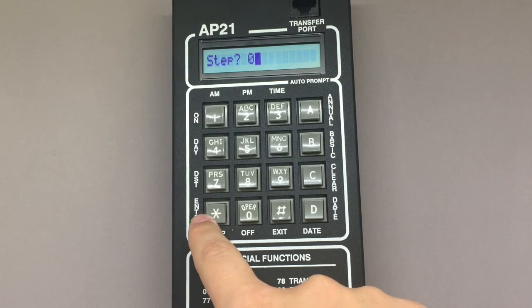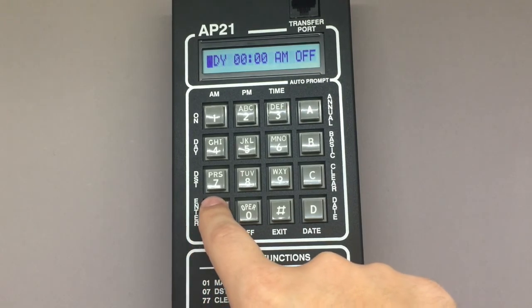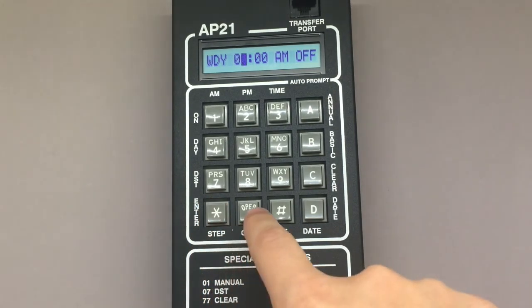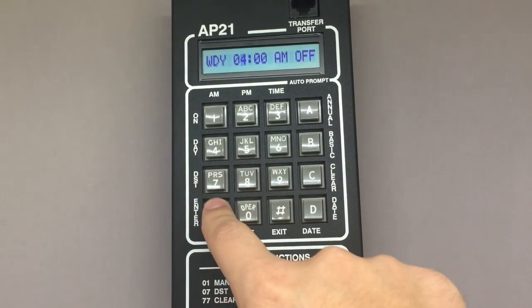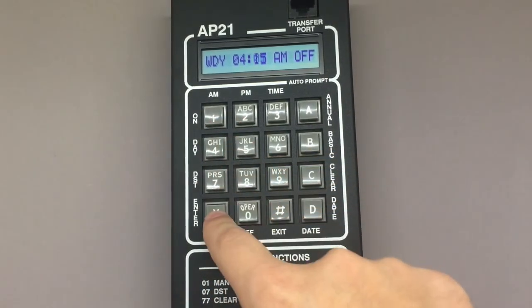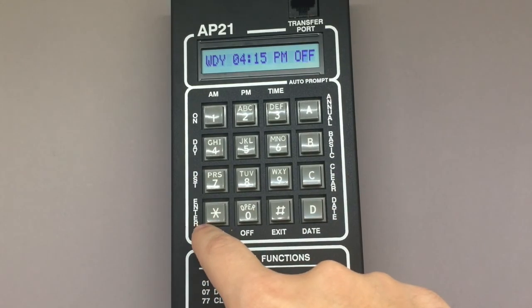Now star to select step 03. Star to select weekday. 04 star, 1, 5 star, 2 for p.m., star, and then star to select off.